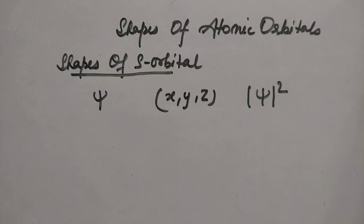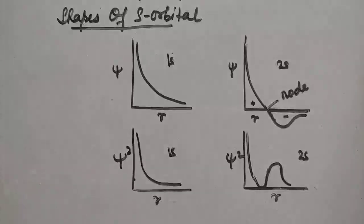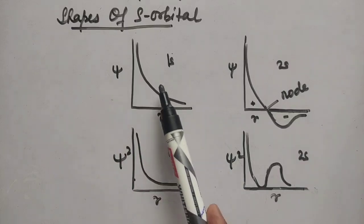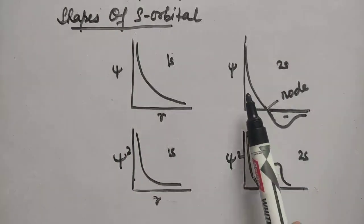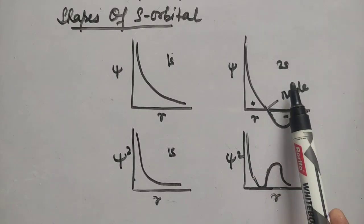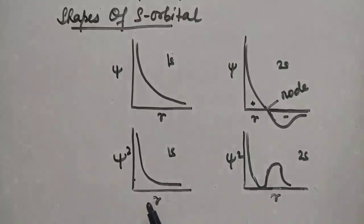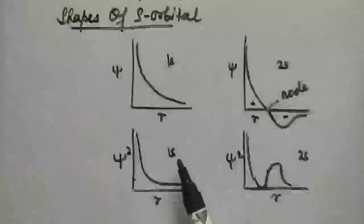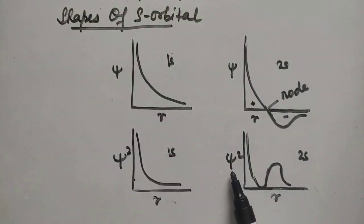The variation of ψ and ψ² at different distances from the nucleus can be plotted. The first diagram shows the variation of ψ with nuclear distance r for the 1s orbital. The second shows the variation of ψ with nuclear distance r for the 2s orbital. There are also graphs showing the variation of ψ² with respect to r for 1s and 2s orbitals.